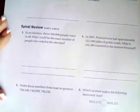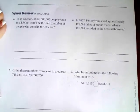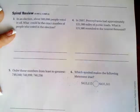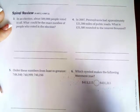Okay. You're going to do the lesson check. Just like always, we're going to go down and do number three for spiral review. It says in an election, about 500,000 people voted in all. What could be the exact number of people who voted in the election?